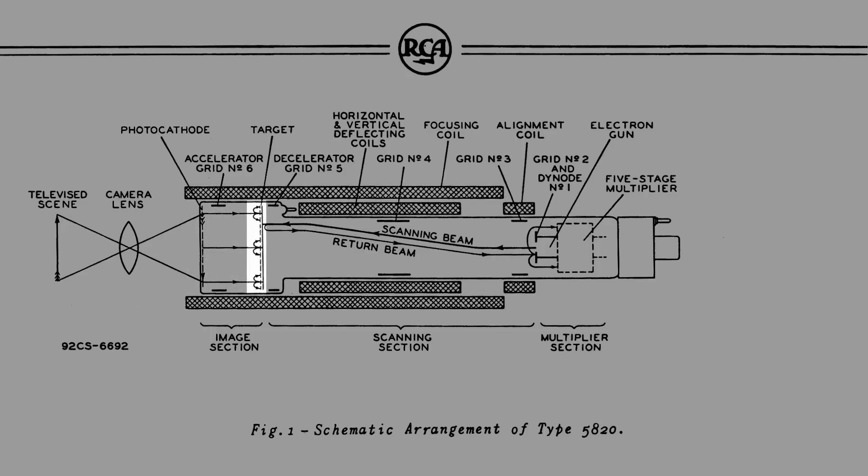On striking the target, the electrons cause secondary electrons to be emitted by the glass. The secondaries thus emitted are collected by the adjacent mesh screen, which is held at a definite potential of about 2 volts with respect to target voltage cutoff.